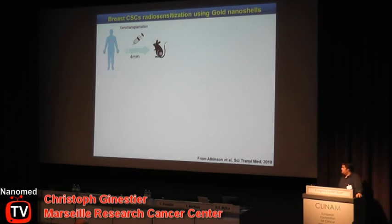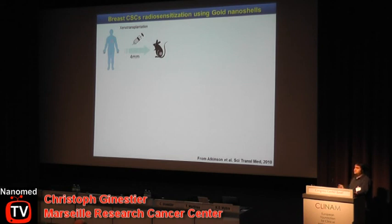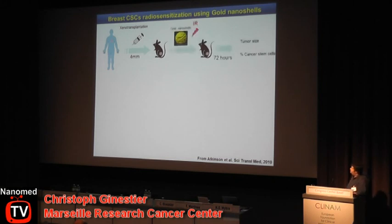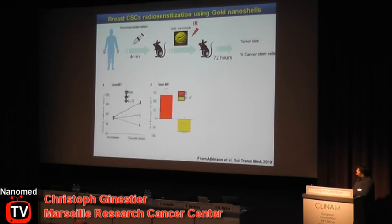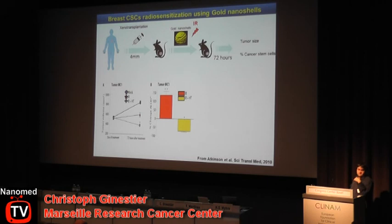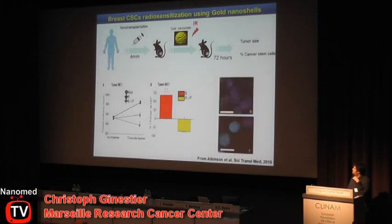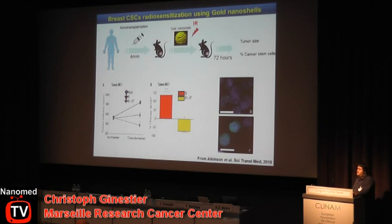I will now show a study done by the group of Jeff Rosen at Baylor College — the only study I found on breast cancer stem cells and nanomedicine — to show that we can directly target the breast cancer stem cell population using nanomedicine. They used the same strategy: primary tumor xenotransplantation with treatment using irradiation alone or irradiation plus gold nanoshells to induce hyperthermia, then assessed tumor size and cancer stem cell percentage. Irradiation or irradiation plus hyperthermia both reduced tumor size. However, irradiation alone induced a large increase in the cancer stem cell population, whereas irradiation plus hyperthermia significantly reduced the cancer stem cell population. This is very encouraging and shows that nanomedicine therapeutic strategies can be designed to specifically target this population.